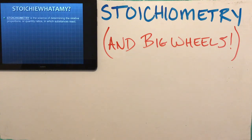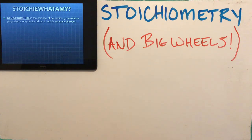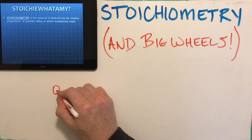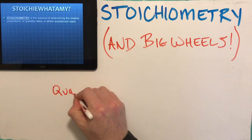When we talk about quantities, quantities are things that have a number and a unit. So we talk about quantities and our unit right now is quantitative chemistry — that means there's a number and a unit.